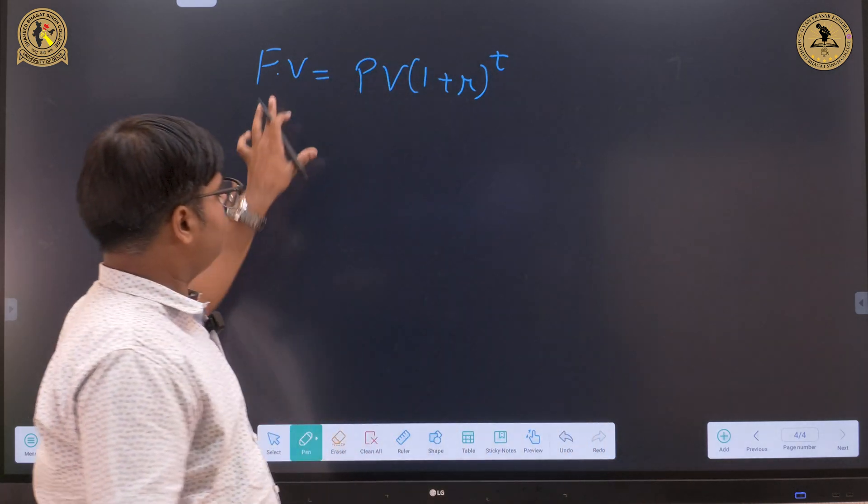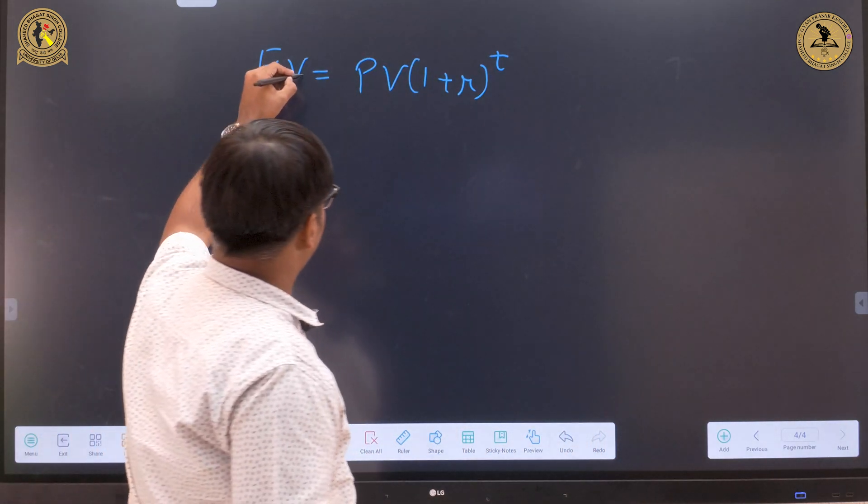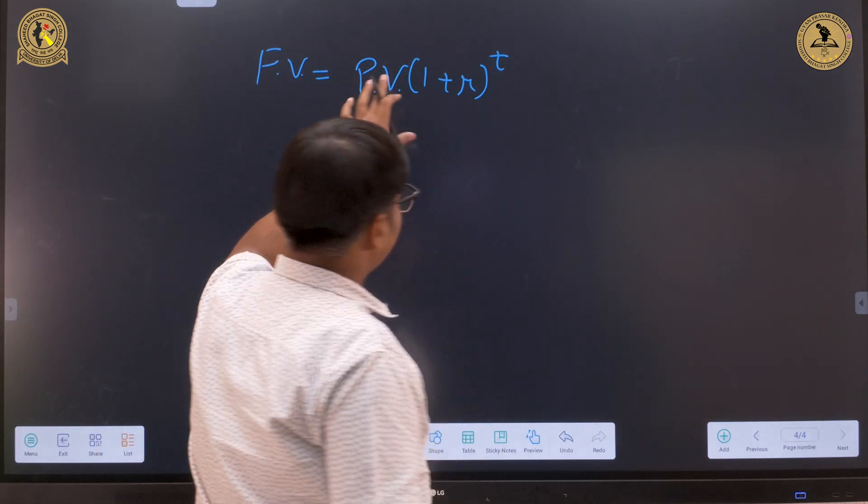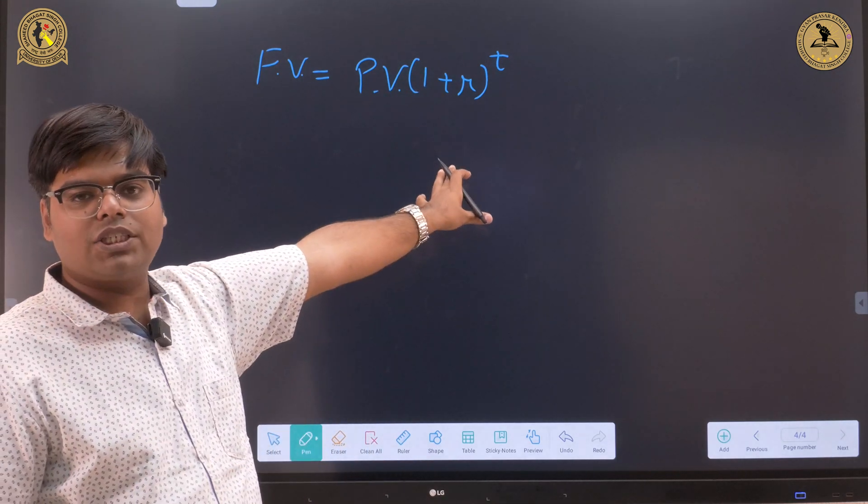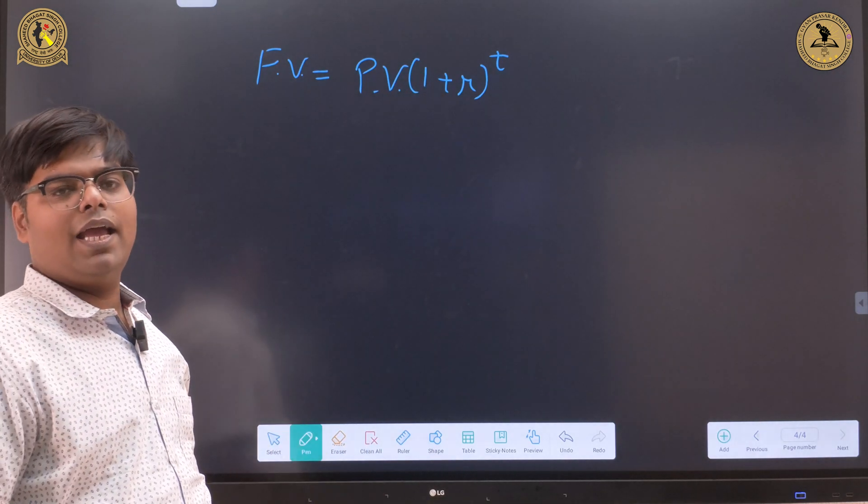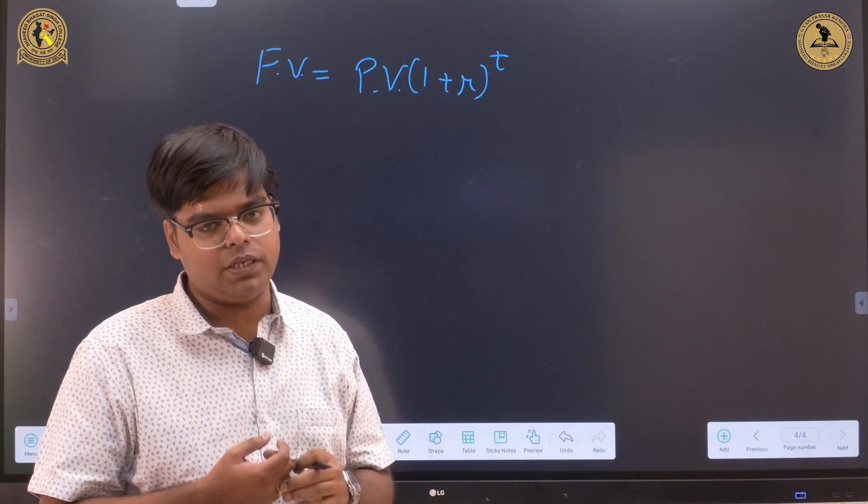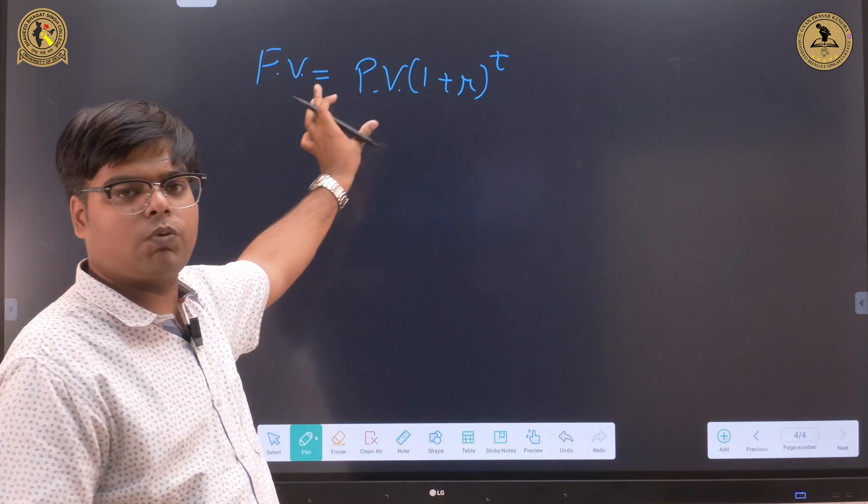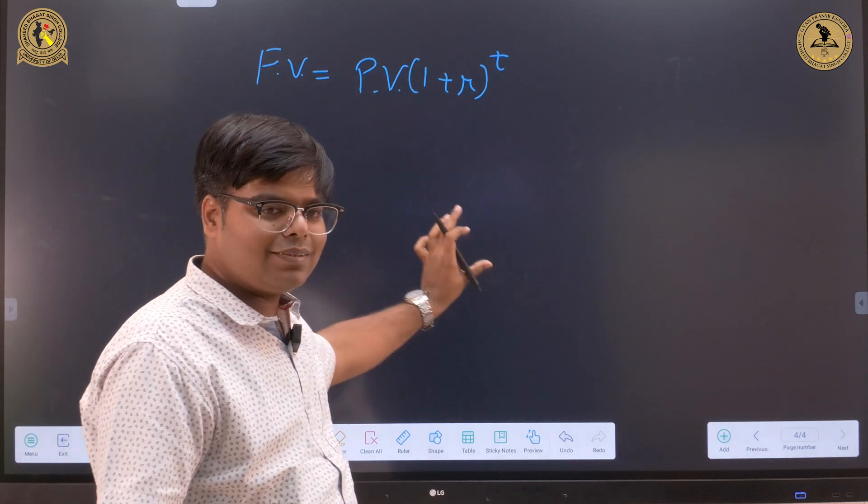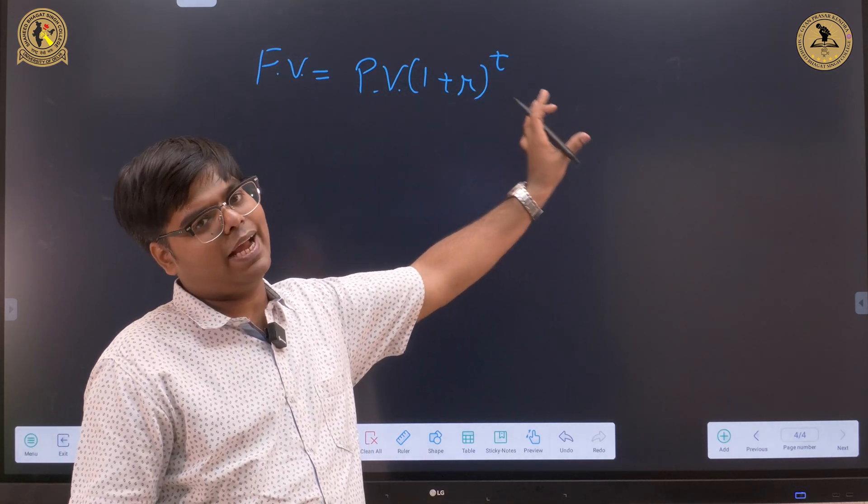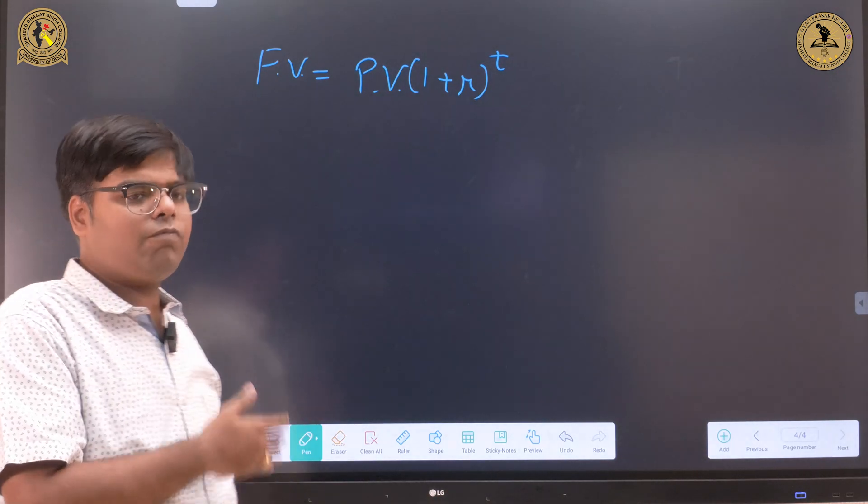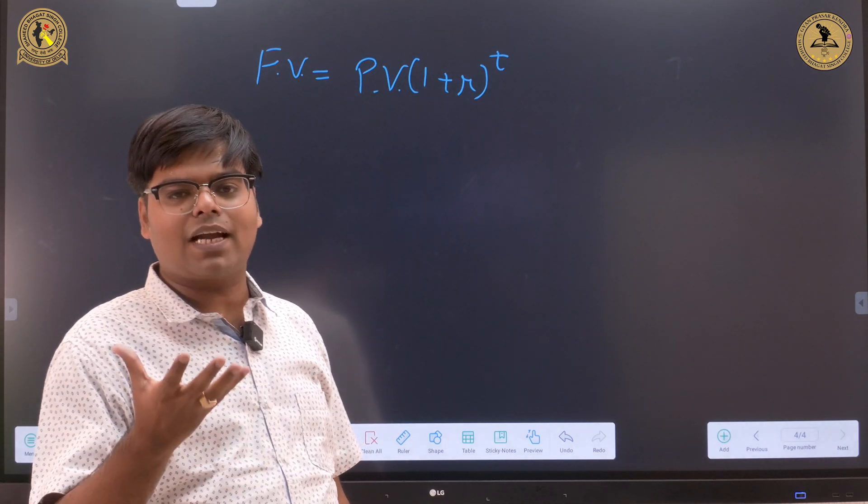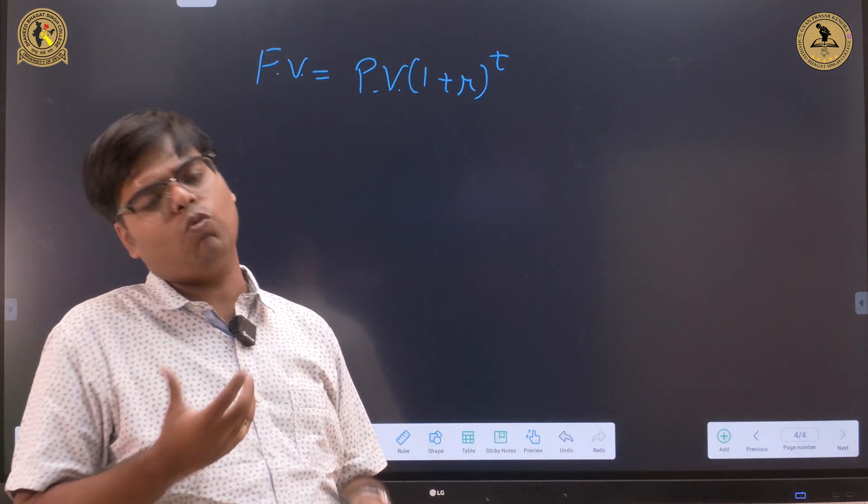Future value, which is FV, equals PV, which stands for present value, multiplied by (1 + r) raise to power t. R stands for rate of interest and T stands for time period. This is a function which explains the relationship between future value, present value, interest rate and the time period. We will apply the same formula to understand that how we derive this 72 figure.